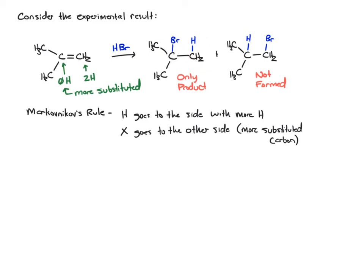The halogen, the Br, goes to the more substituted carbon. Markovnikov's rule is a good way to memorize what products we're going to get, but it still doesn't really get to the heart of explaining why we get this particular outcome in the reaction. Anytime there's a why, a good place to start is in looking at the mechanism.